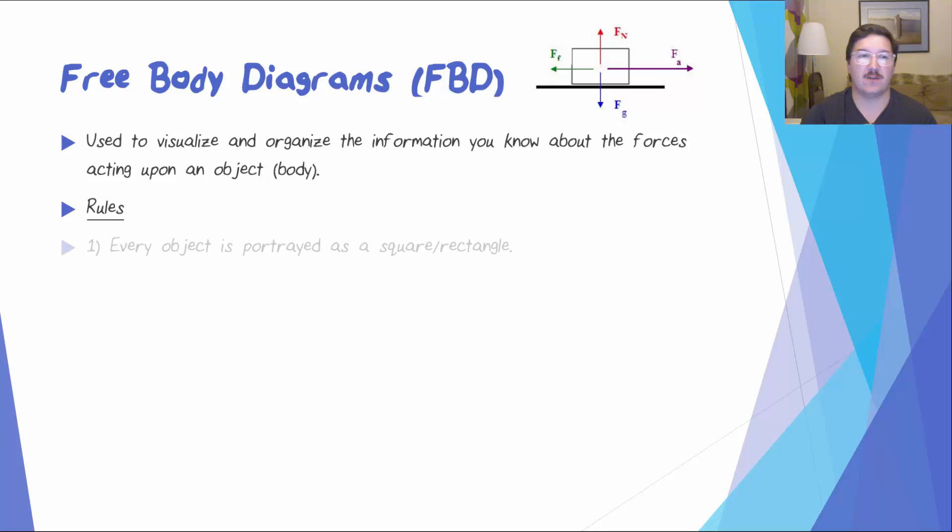There are some rules to how we draw these. First of all, every object is portrayed as a square or a rectangle. This is a diagram, not a drawing. Second, if the object is on a surface or an incline, you have to include that in your diagram, much like in the example above.